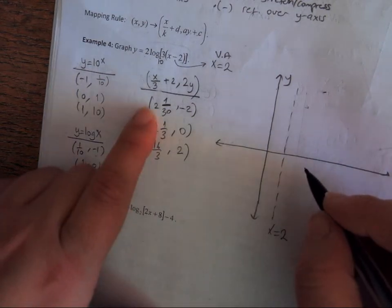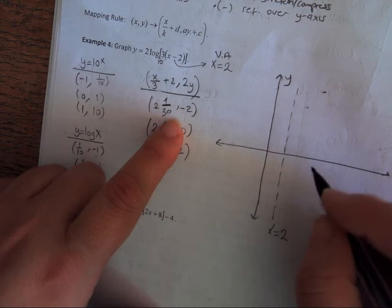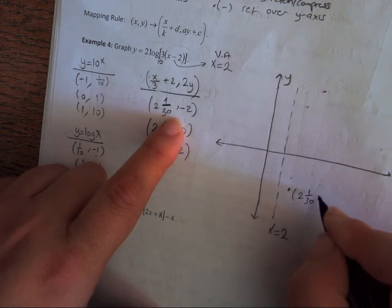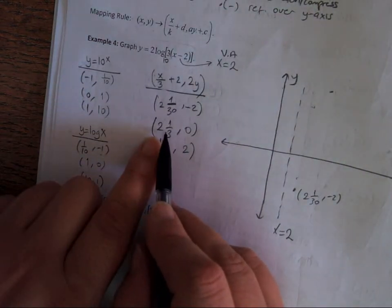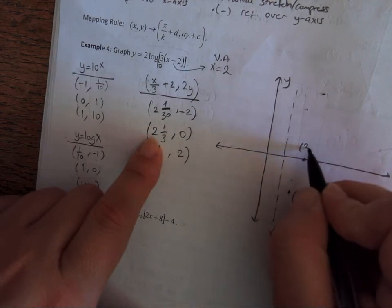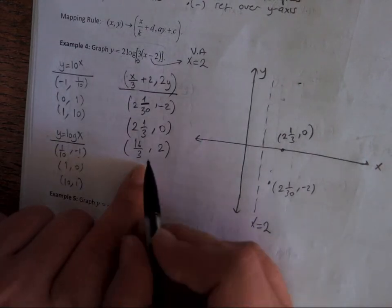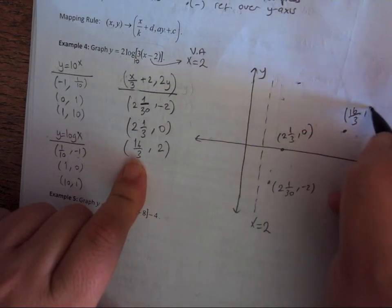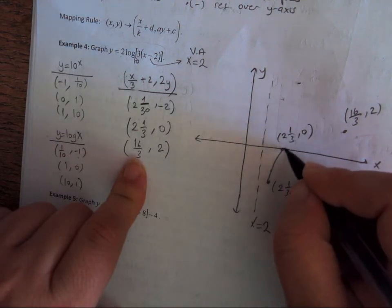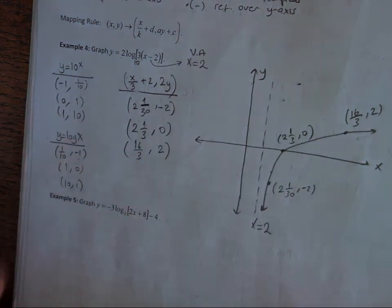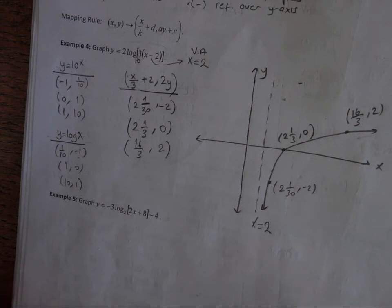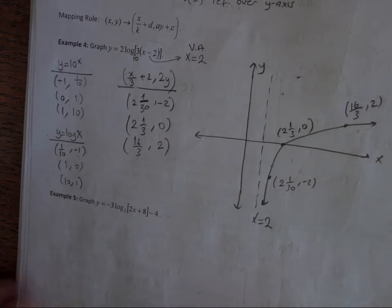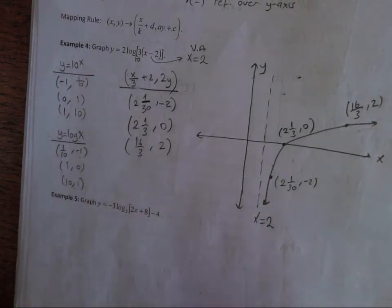Placing the points: (2 1/30, -2) is very close to the asymptote x = 2; (2 1/3, 0) is just slightly further; and (5 1/3, 2) is further to the right. Sketch a curve through these points. Note that you have to do three tables to get the points for a transformed logarithmic function.